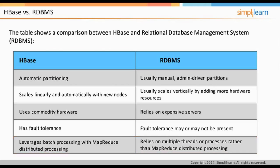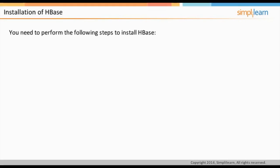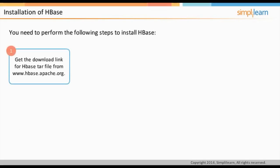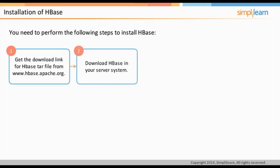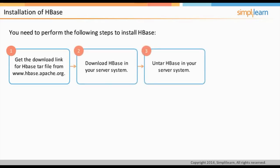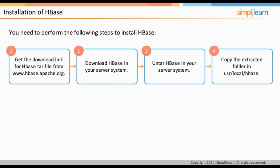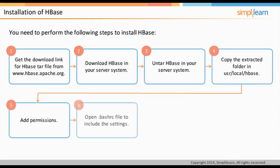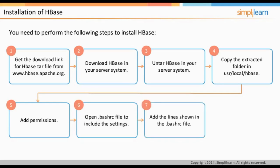The following steps must be performed for the installation of HBase: get the download link for the HBase tar file from the Apache website; download HBase to your server; untar HBase; copy the extracted folder to the appropriate location; add permissions; open the .bashrc file to include the settings; add the required lines to the .bashrc file; and refresh the .bashrc file.